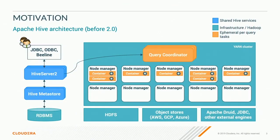Most of you probably know Hive architecture already, but let me go real quick through it. Users connect with their favorite clients — JDBC, ODBC, or Beeline, the thin client that comes with Hive — to Hive Server 2 and submit their queries. Hive Server 2 will parse and compile them, possibly contacting Hive Metastore, which is the data catalog for the cluster. After compiling, it creates a DAG of executable tasks submitted to the task AM, which coordinates query execution, spins up containers, and so on. The query may retrieve data from HDFS, object stores, or any other external engine.